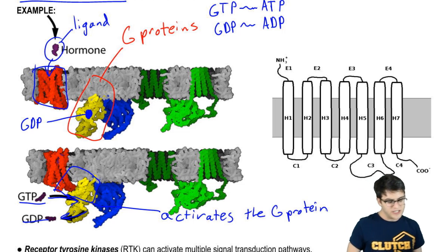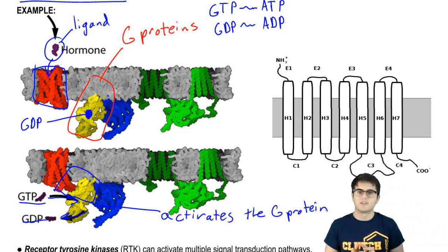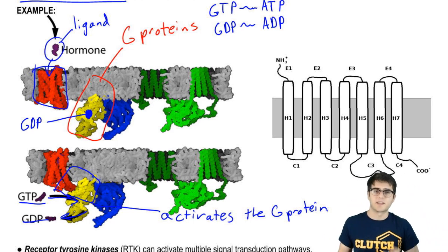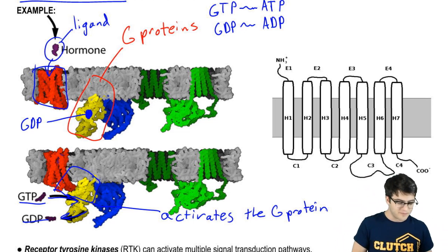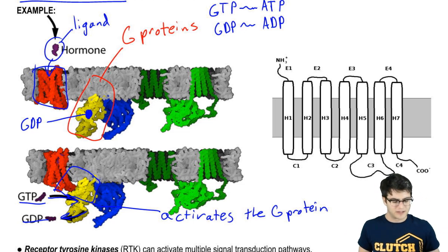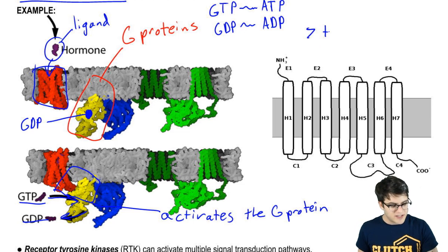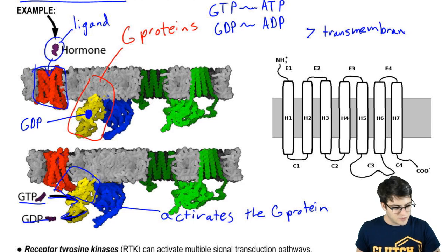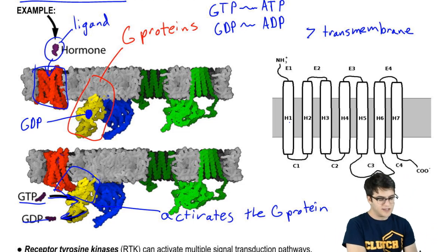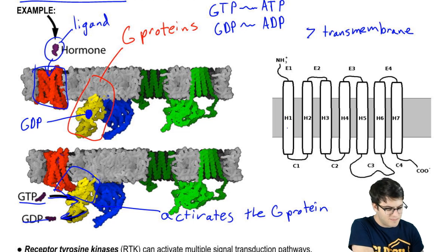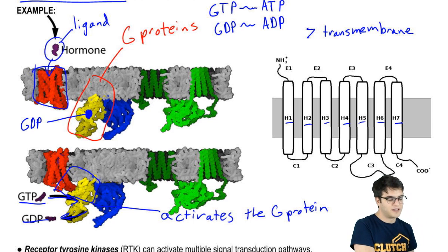That G-protein is going to go off and start a signal transduction pathway, and that's something we're going to talk about in the next video. Before we move on from G-protein-coupled receptors, I want to talk about one more thing — their structure. G-protein-coupled receptors have seven transmembrane domains, and this is something characteristic of these proteins. One nice way to identify a G-protein-coupled receptor is by its seven transmembrane domains.